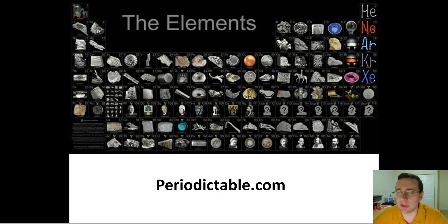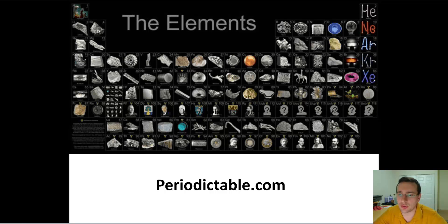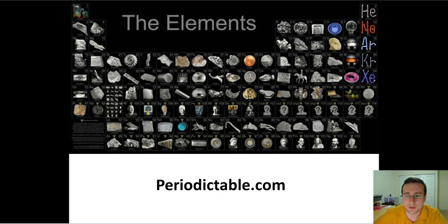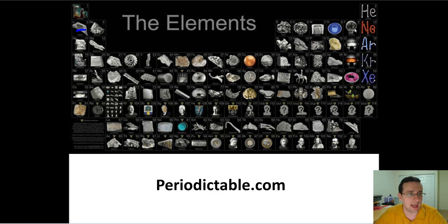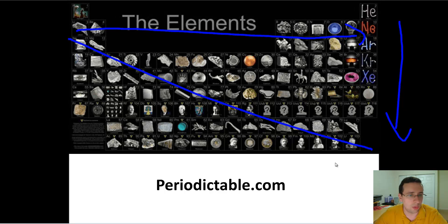We've talked a lot about the periodic table already, and you should know many of the patterns that show up in it. You should know about how the atomic numbers change throughout the periodic table — that's basically going to be towards the right side and towards the bottom. So that's the general point of increase of that pattern.